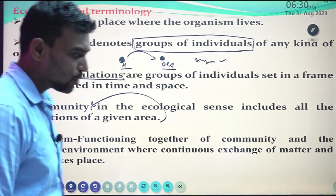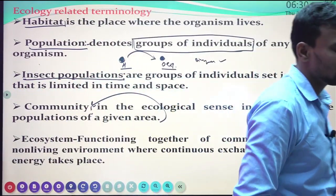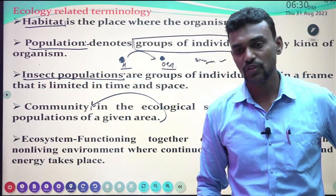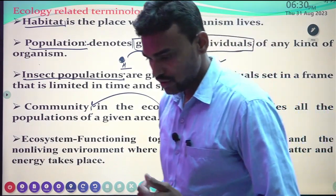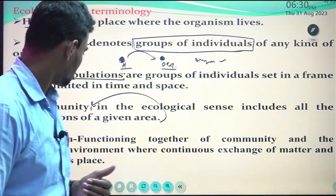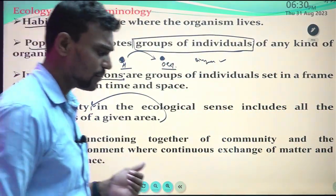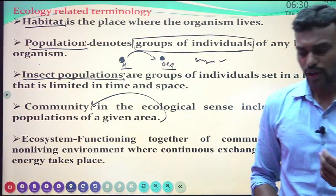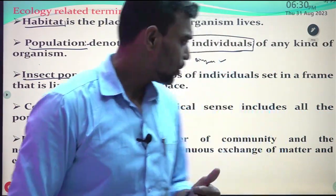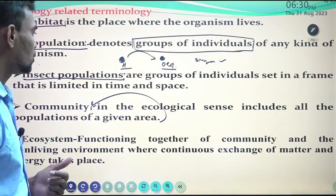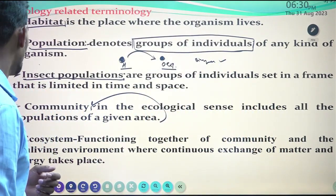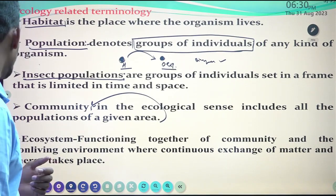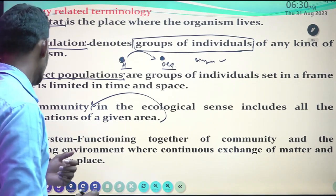Ecosystem is one of the related terminologies to ecology, having a major role in insect ecology too. Ecosystem means the functioning together of the community and the non-living environment, where continuous exchange of matter and energy takes place.